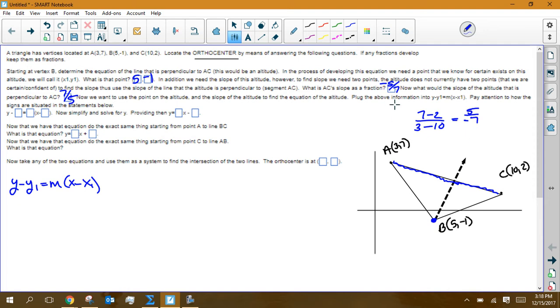And then the opposite sign reciprocal would be 7 fifths. Always a good idea to double check. To double check that real quick, this slope is going down. So it should have been negative right there. This slope is going up from left to right. So it should have been positive.